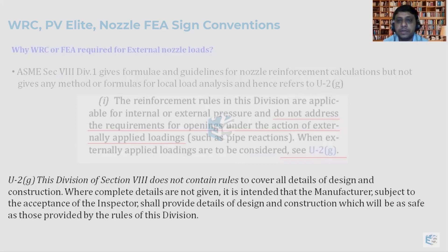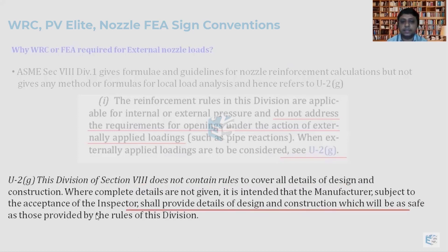As highlighted and underlined in the code statement: ASME Section 8 does not contain the rules to cover all details of design, and the manufacturer, subject to acceptance of the inspector, shall provide details of design and construction which will be as safe as those provided by the rules of this division. So we have to adopt some other method.